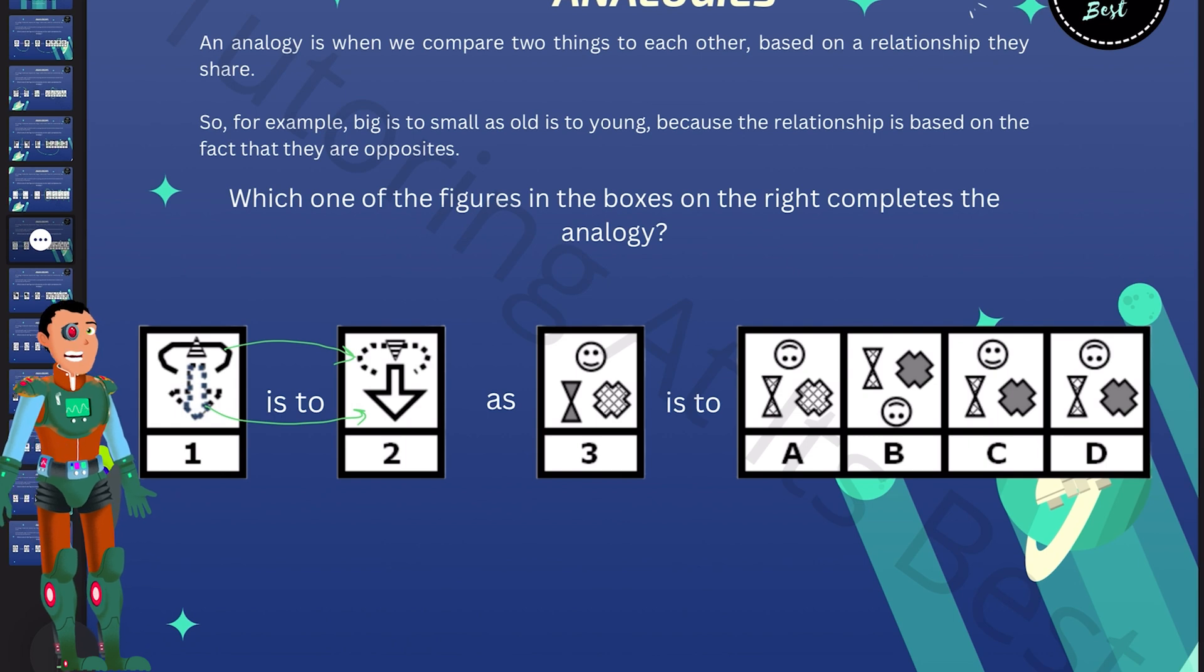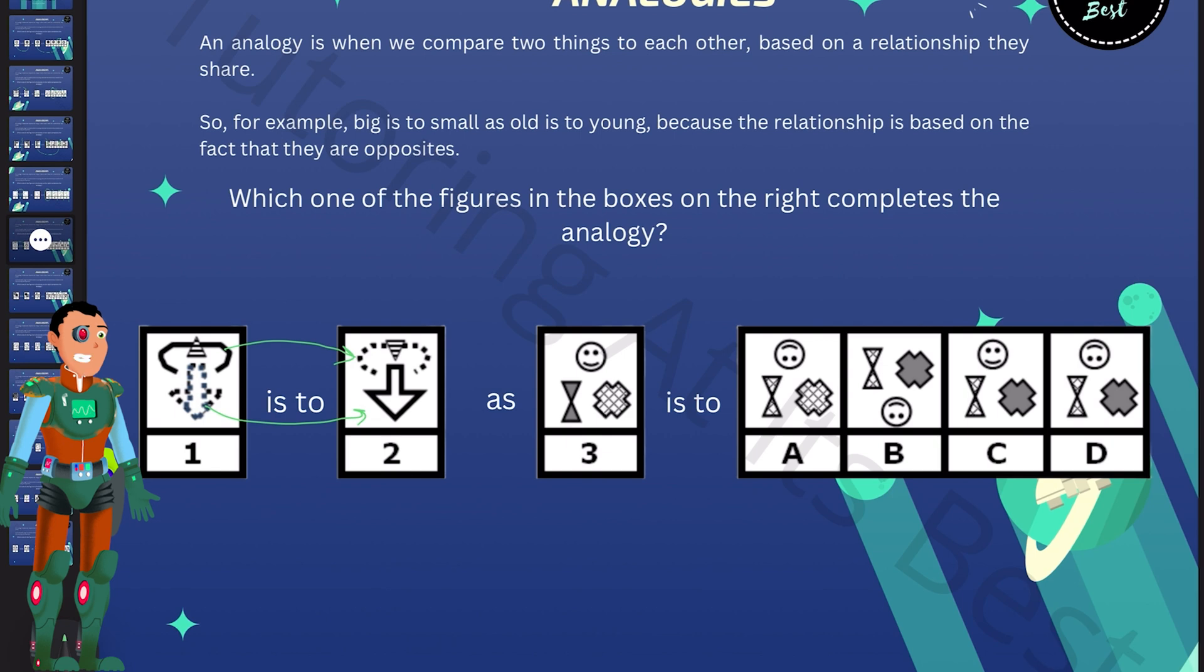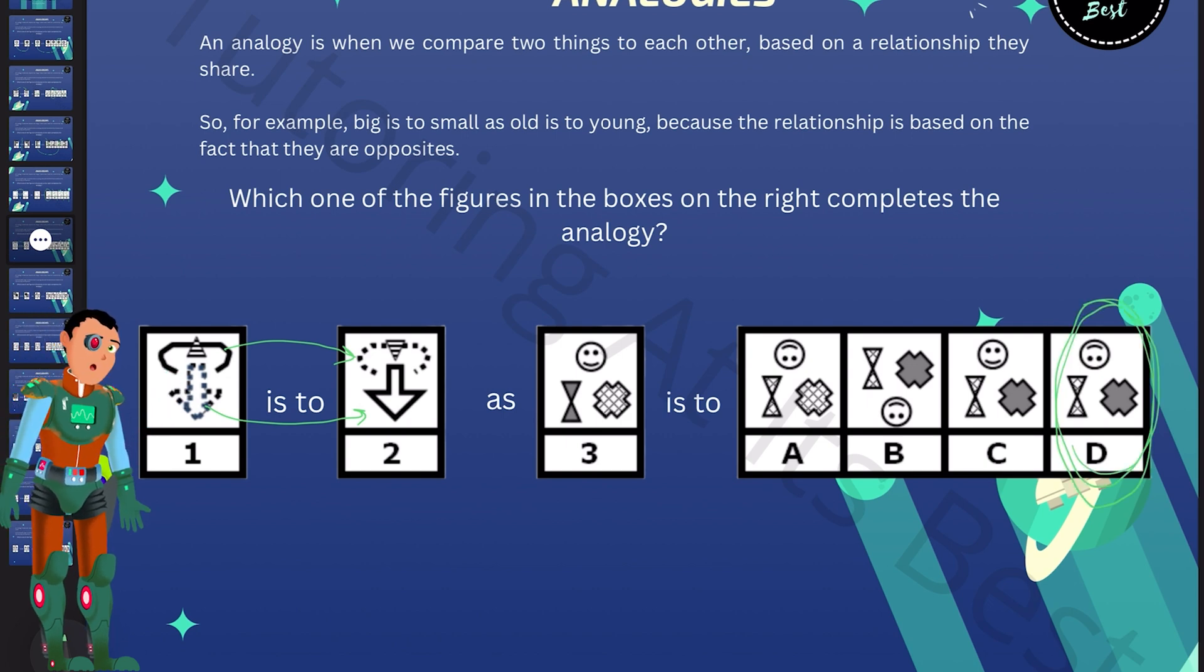Where the checked X shape becomes grey and the grey double triangle shape becomes checked. However, we see in the original that the small triangle is turned upside down. So which box contains the right shading and an upside down smiley face? So again, we can see both B and D have the upside down smiley face. But B has moved the smiley face to the bottom. So it cannot be the right answer. So our answer is D.